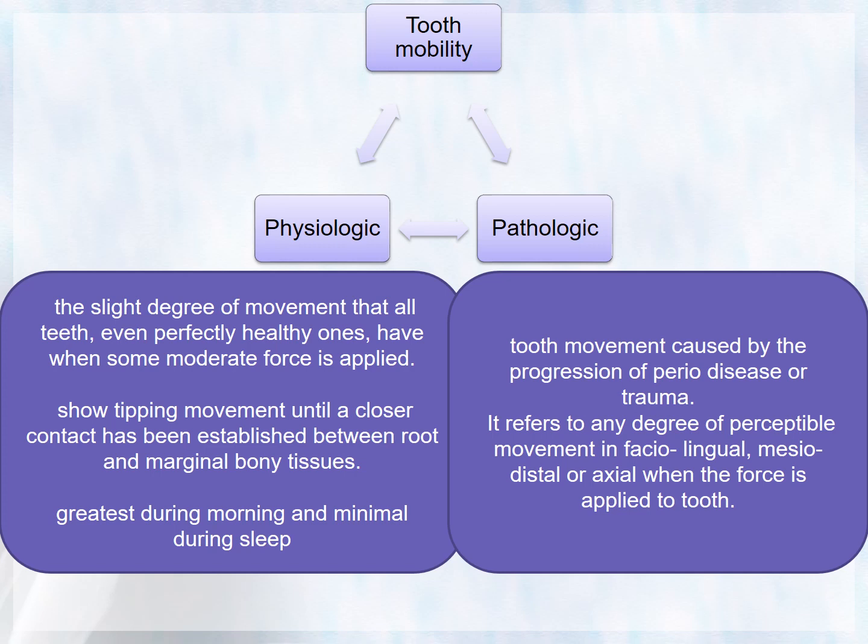There are different stages of tooth mobility: the initial stage and the secondary stage. The initial stage is the intra-socket stage, where the tooth moves within the confines of the periodontal ligament. The secondary stage occurs gradually and entails deformation of alveolar bone in response to increased horizontal forces.